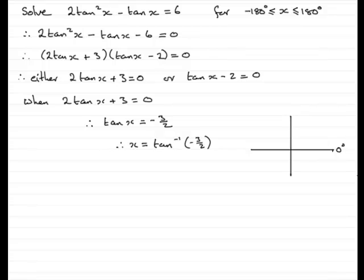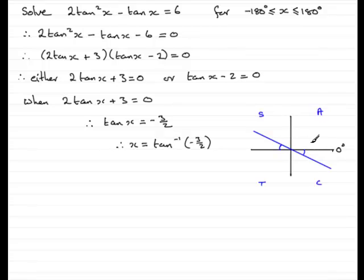Don't forget to mark 0 on the quadrant diagram. We need to find which quadrants tan is negative. Remember: first quadrant all trig functions are positive, second quadrant sine is positive, third quadrant tan is positive, fourth quadrant cosine is positive. So tan is negative in the second and fourth quadrants. Draw a line equally inclined to the horizontal and mark those two angles. Starting from 0 degrees, the first blue line is a turn of less than 180 degrees, so that's a possible value for x.